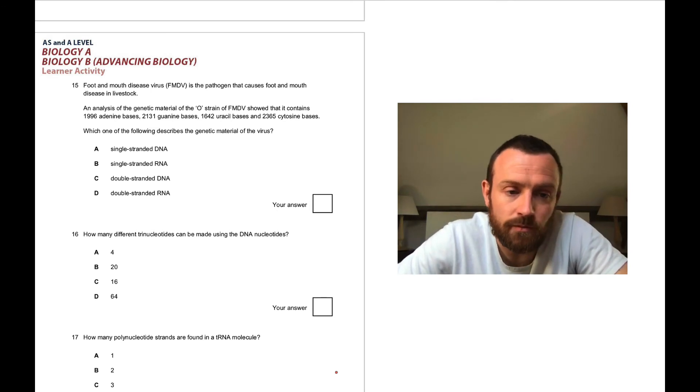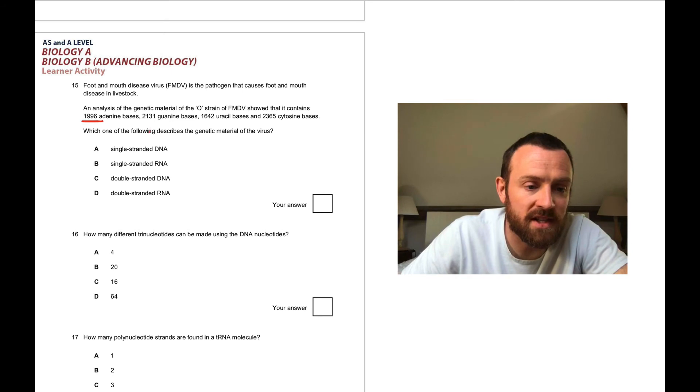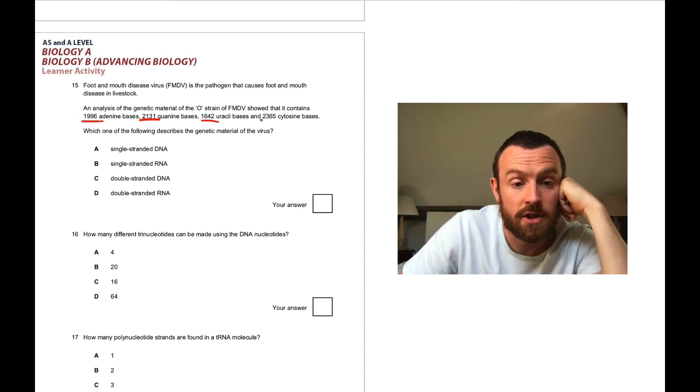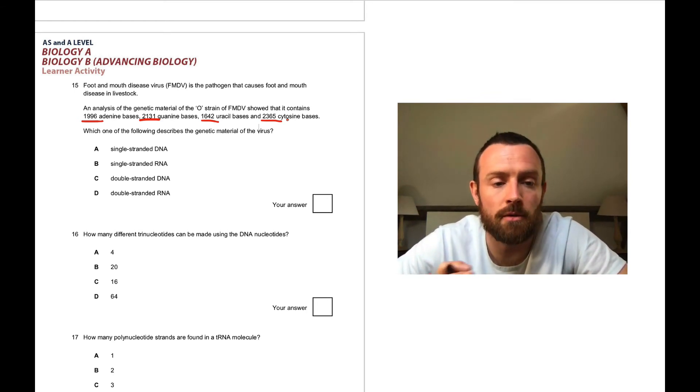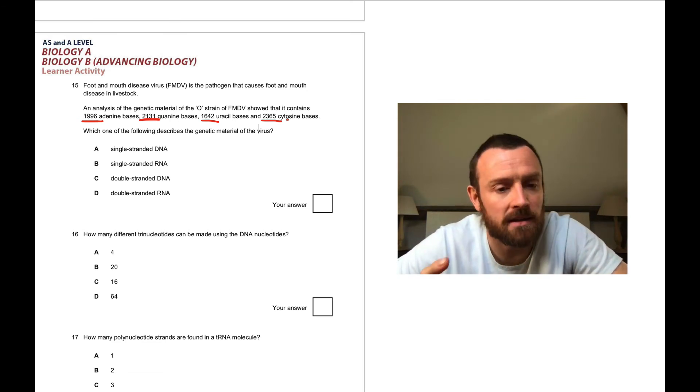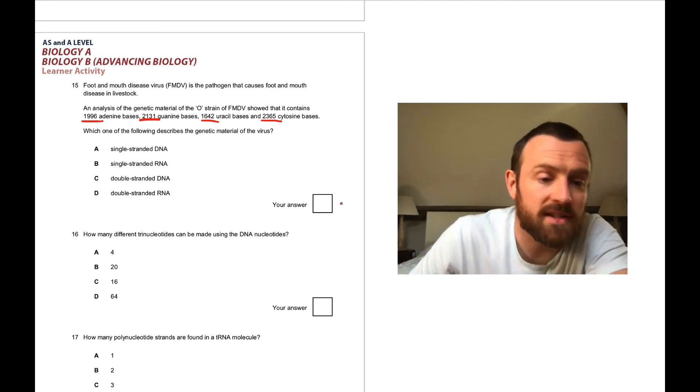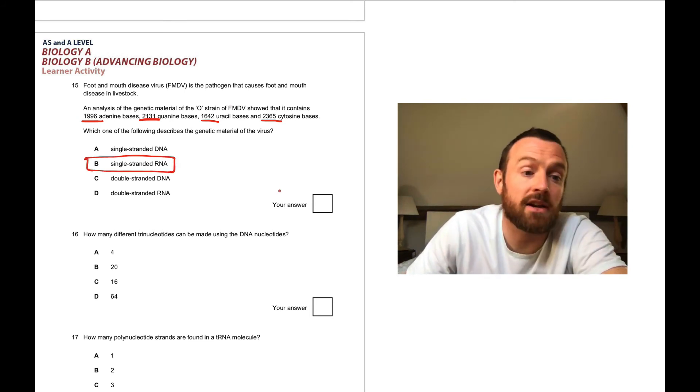Question 15: I like this question, it's a bit tricky. Foot and mouth disease virus is a pathogen. They analyze it and find 1996 adenine, 2131 guanine, 1642 uracil, 2365 cytosine. The interesting thing is A and U don't pair up and G and C don't pair up in the exact same number we would expect. Therefore this strand is not double stranded but single stranded, and because we've got uracil it's RNA. It's single stranded RNA, so it's a single stranded RNA virus.